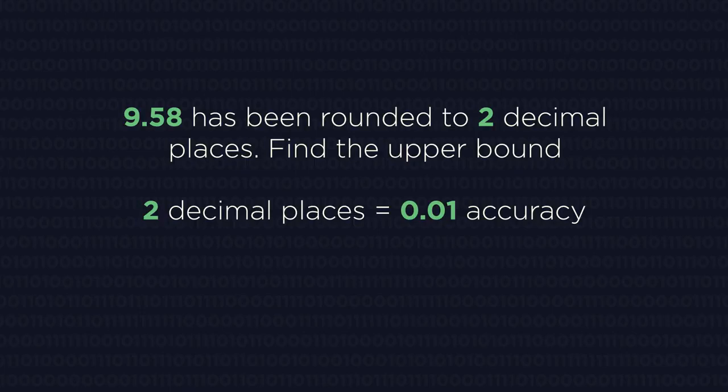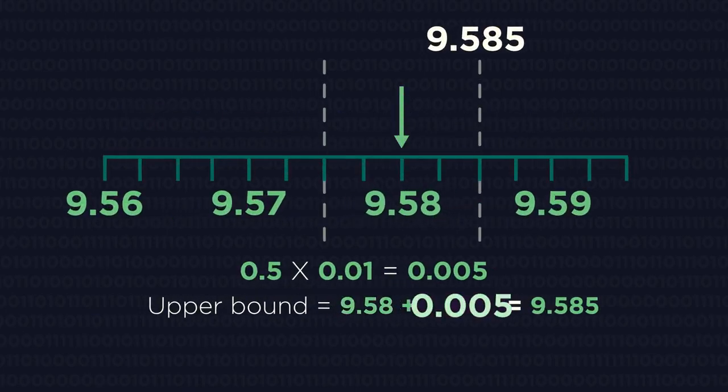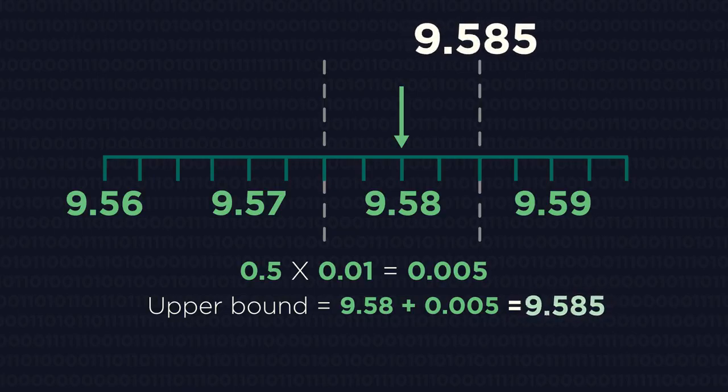Two decimal places is 0.01 accuracy. So half of this is 0.005. You just go one decimal place further along. So 9.58 plus 0.005 equals 9.585.